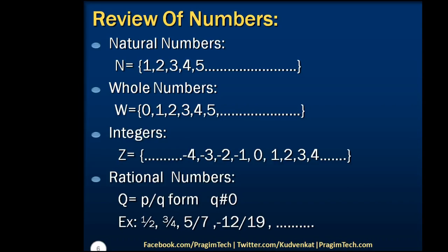Negative numbers along with whole numbers are known as integers. Integers include negative numbers, 0, and positive numbers, and are represented with the letter Z. The next type of numbers are called rational numbers, which are in the form of p by q — that is, fractions. The denominator value should not be equal to 0, i.e., Q ≠ 0. Examples include 1/2, 3/4, 5/7, and even negative numbers like -3/4 and -5/8.